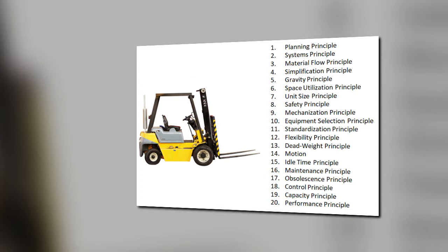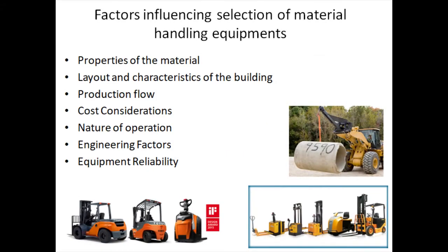Now we shall discuss the factors that influence the selection of material handling equipment. The key factors include: properties of material, layout and characteristics of the building, production flow, cost, nature of operations, engineering factors, and equipment reliability. The property of the material is very important — we have to see whether it is liquid, solid, or gas, and what size, shape, and weight it needs to be moved. If a material is fragile, corrosive, or toxic, this implies that certain handling methods and containers will be preferred over others.